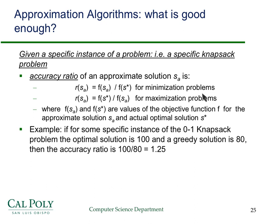Suppose we've got a minimization problem. Then the solution given by our algorithm — f of s-sub-a — divided by the objective function value of the optimal solution gives a ratio greater than one for a minimization problem. For a maximization problem, we flip it, because the optimal solution will have a bigger value than the approximation solution. Both ratios will be greater than one, allowing us to compare how well algorithms perform on both maximization and minimization problems.